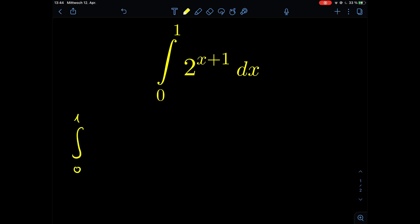So let's take the integral from 0 to 1, 2 to the power of x plus 1 dx. We can simplify the integrand first because the integrand is just 2 times 2 to the power of x if we use the laws of exponential functions and the limits stay the same, from 0 to 1.